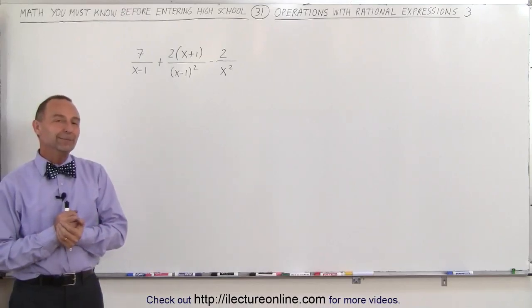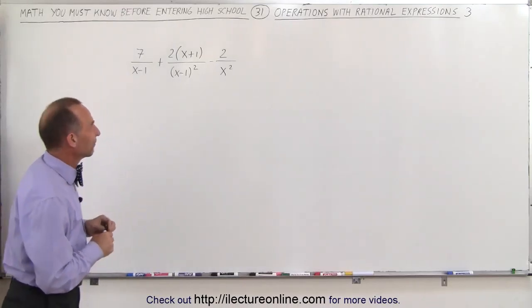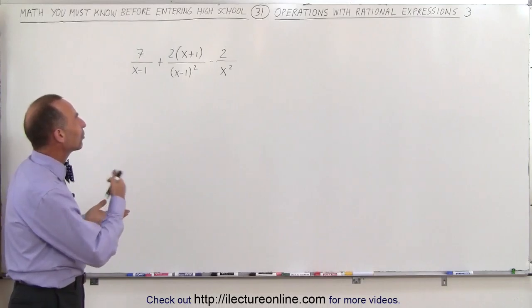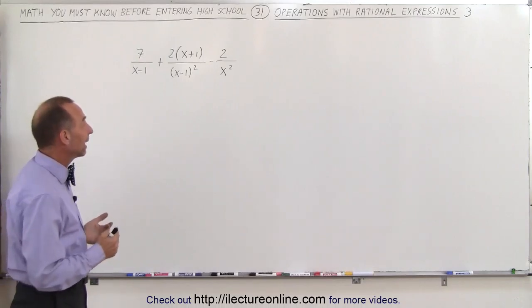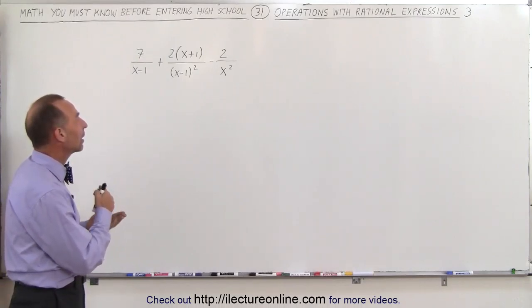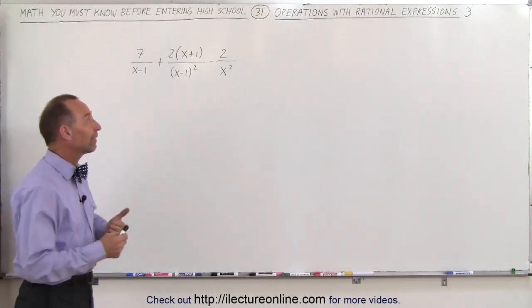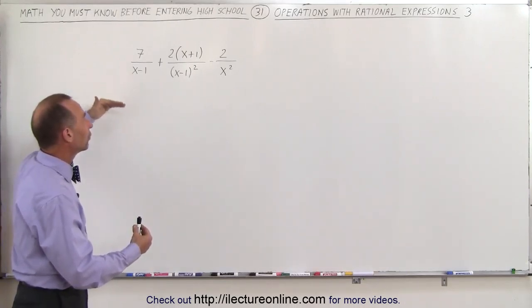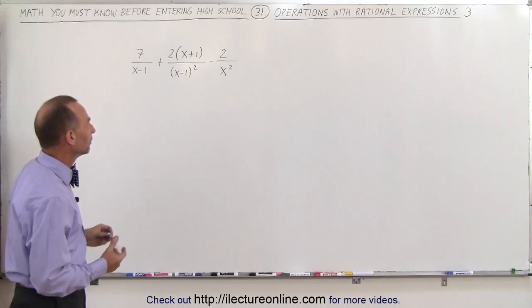Welcome to ElectronLine. Here we have something slightly different. We're adding and subtracting some rational expressions, and they do not have the same common denominator, which means we have to find the lowest common denominator and rewrite this over that lowest common denominator.